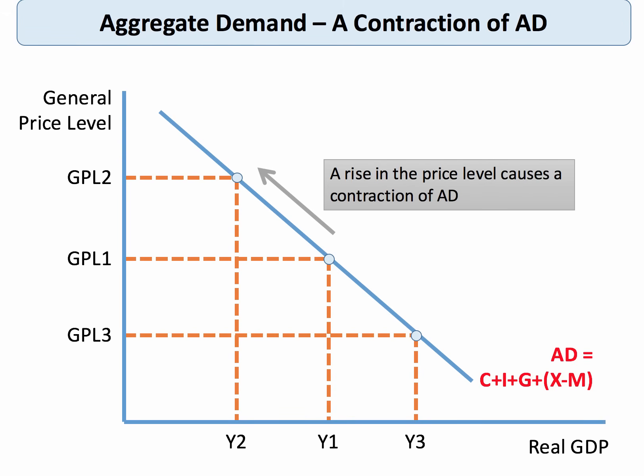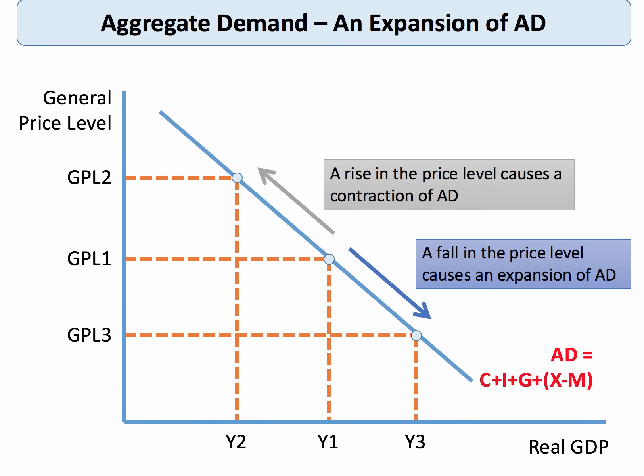Here's the aggregate demand curve. If you're familiar with microeconomics, it shows the relationship between the general price level and real national income. We'll do a separate topic video explaining why it's downward sloping. For now, keep in mind that if the price level goes up, aggregate demand is likely to contract — partly because people have less real income. And if the price level goes down, aggregate demand could expand for the opposite reason.